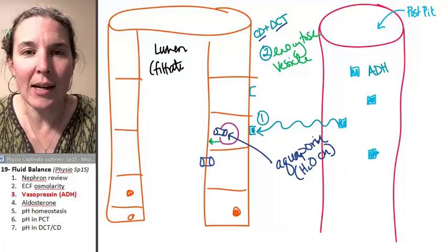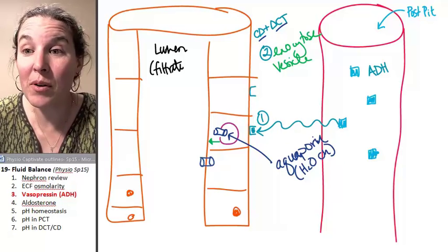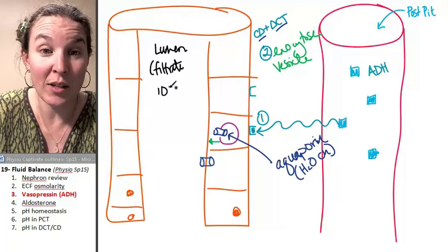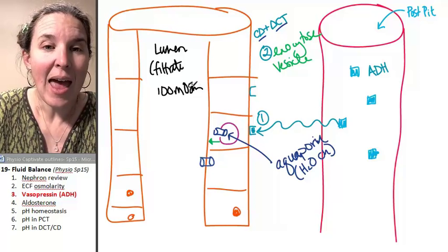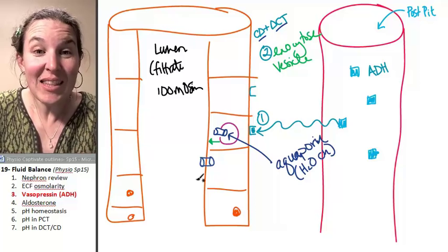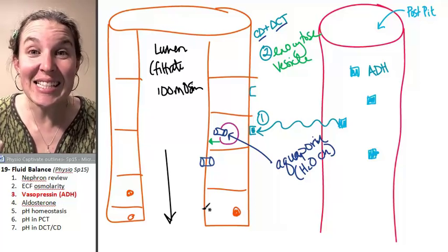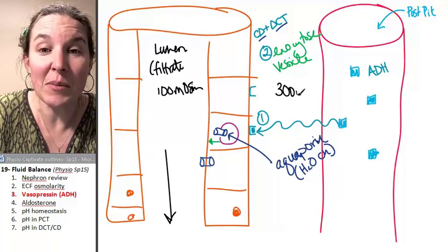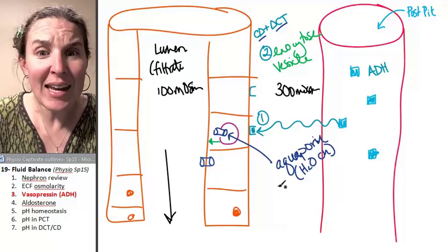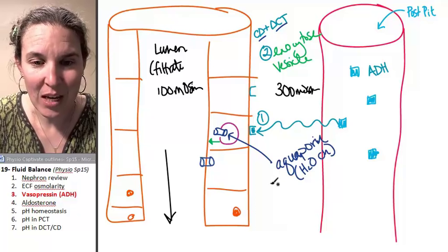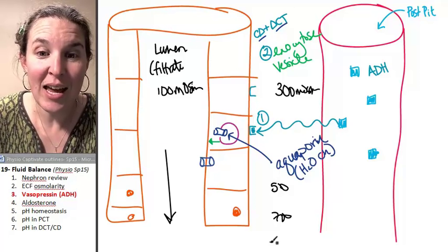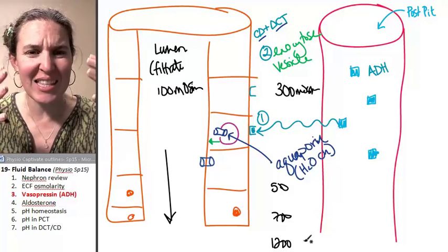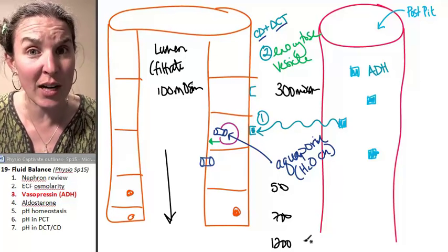Now what's going to happen next? Well, remember that when our filtrate enters the scene, it's probably got a concentration of let's just say 100 milliosmoles. And this right here, the collecting duct is sitting inside that medullary concentration gradient. So at the very least, this is 300 milliosmoles. And it's getting more concentrated as we go down. So let's say this is 500, this is 700, this is 1,200 down at the bottom.